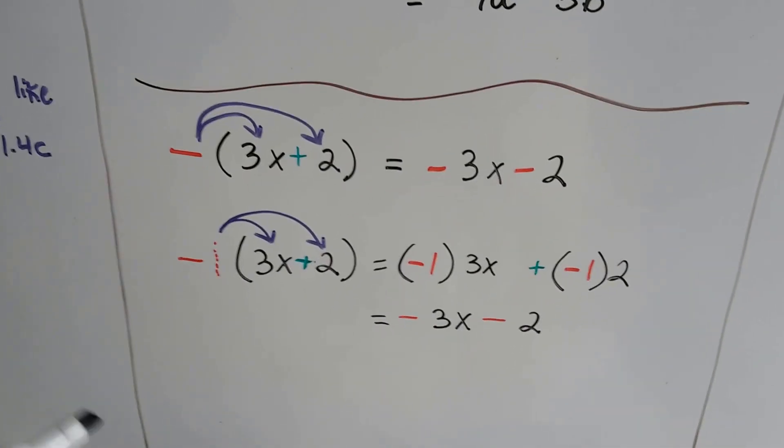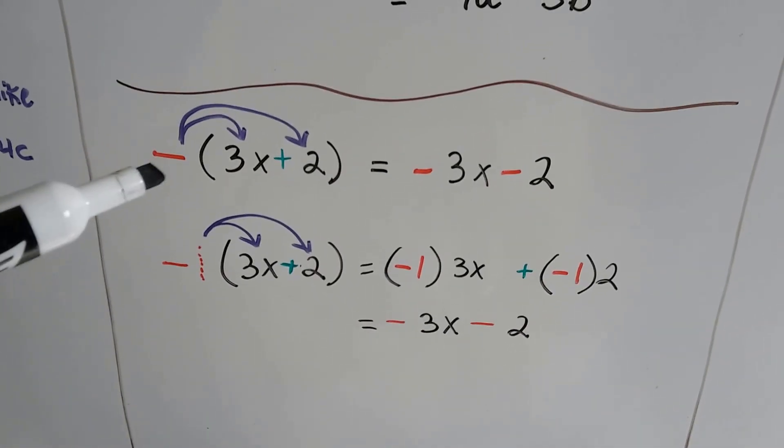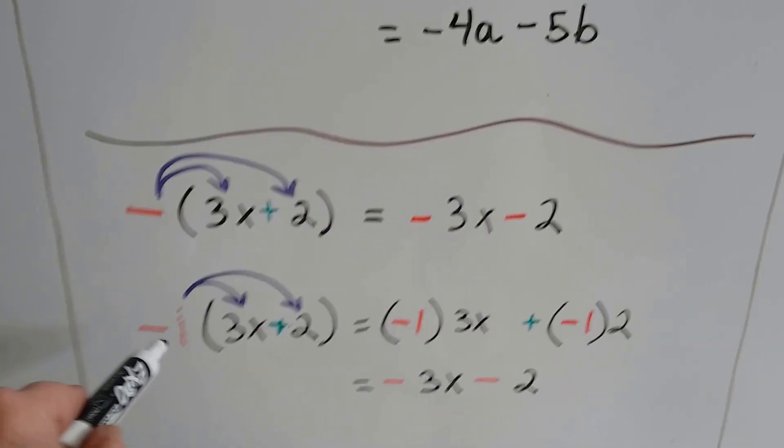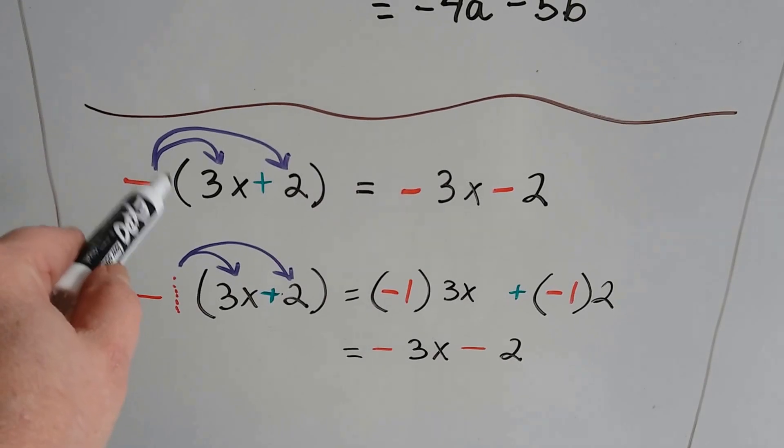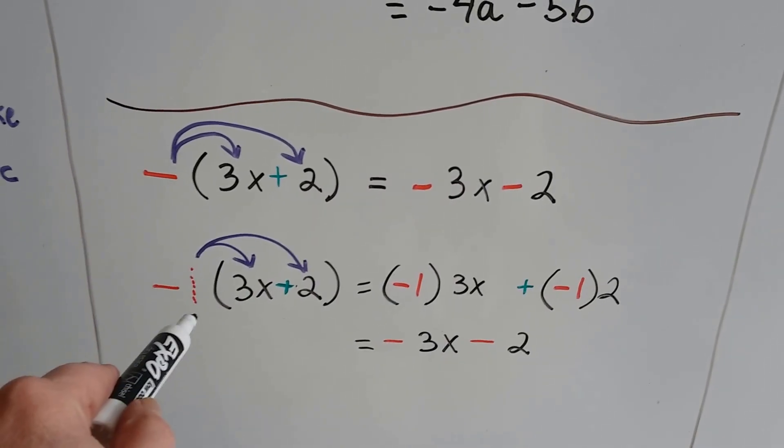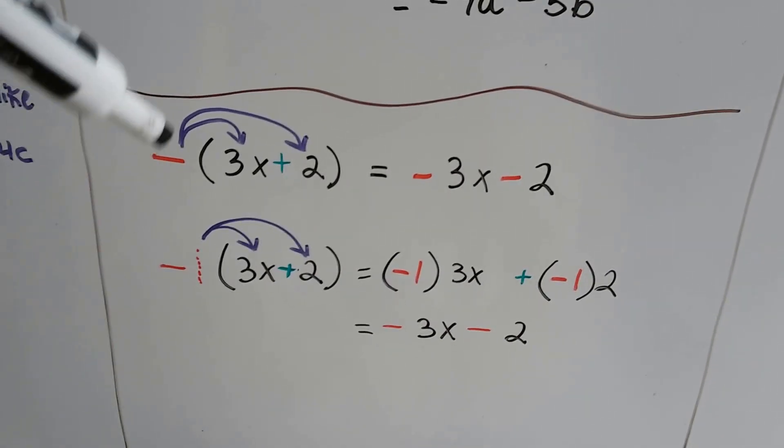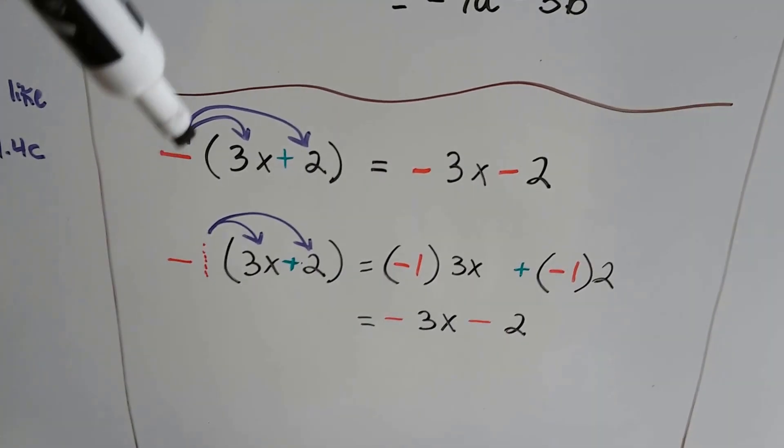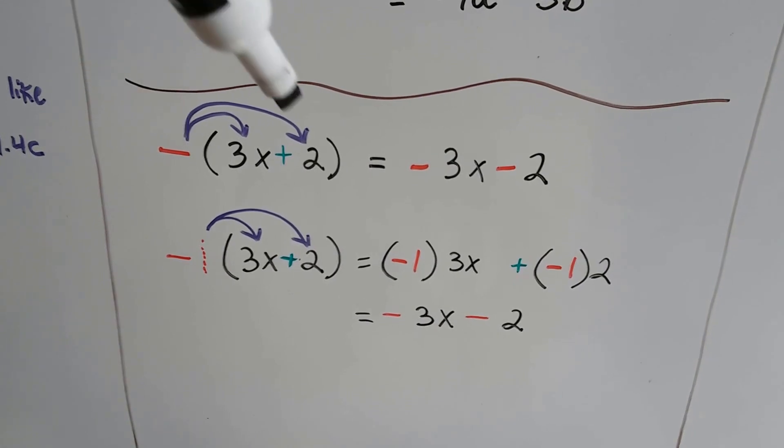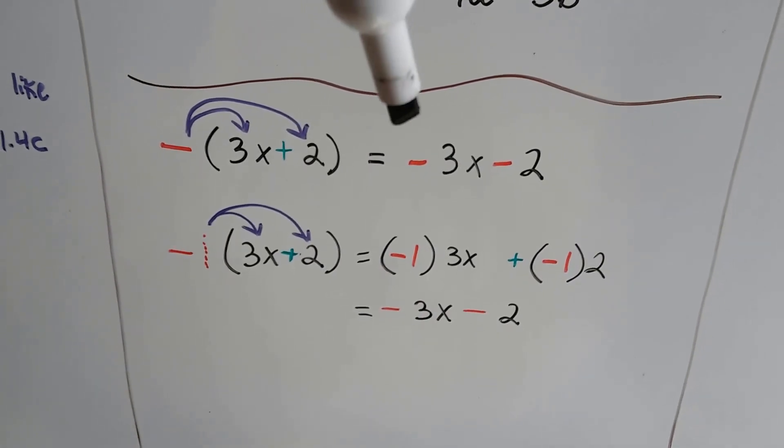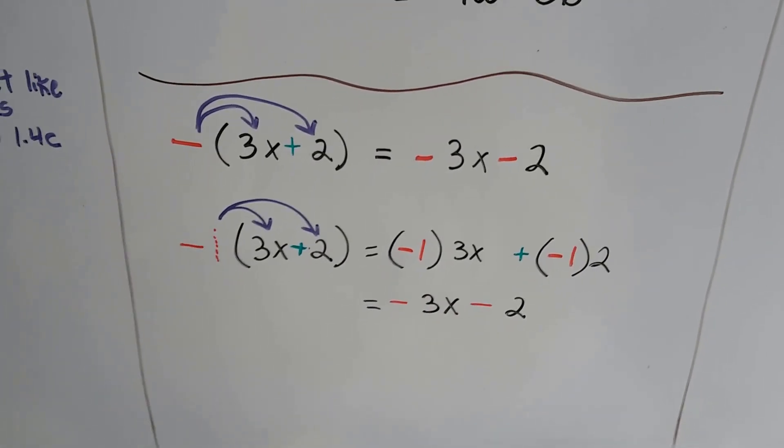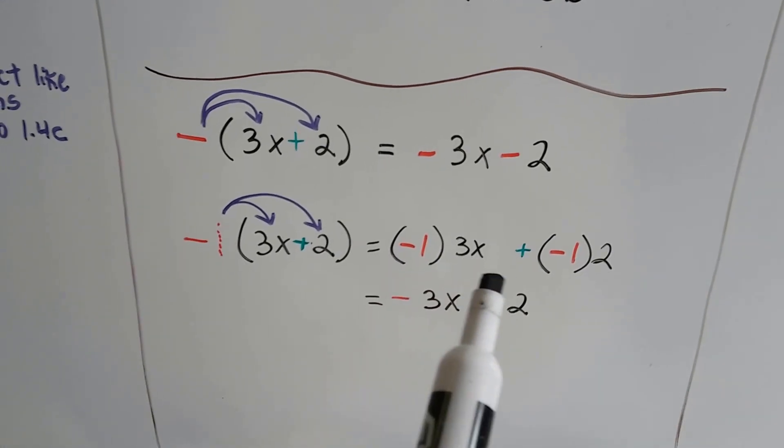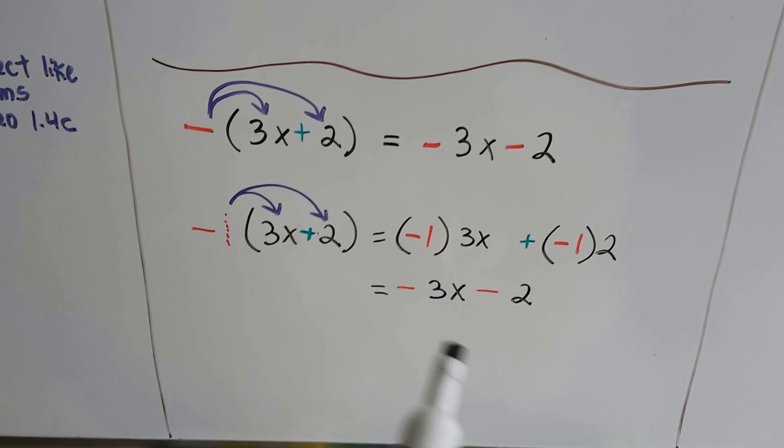And we covered this in the last video, but I thought I'd put this again. When we see a negative like this, this inverse, remember there's an invisible 1 in front of this parentheses. It's like an invisible 1 coefficient. And we can distribute this negative 1 to the 3x and to the positive 2. That gives us a negative 3x minus 2. You can also look at it as negative 1 times 3x plus negative 1 times 2.